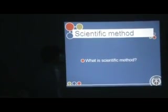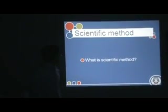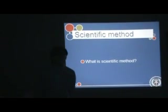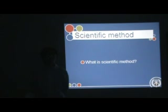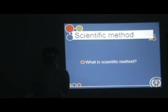What is scientific method? 1. Creating data. 2. Formulating hypothesis. 3. Testing hypothesis. 4. Interpreting results. 5. Stating conclusion. Let it be evaluated by others.